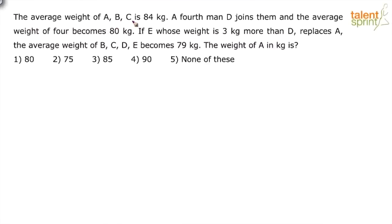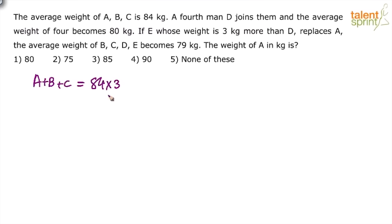The average weight of A, B, C is 84 kg. So we can say A plus B plus C is equal to 84 into 3, because the sum of observations is equal to the average into number of observations. The number of observations here is the number of persons, so A plus B plus C will be 84 into 3, which is 252.